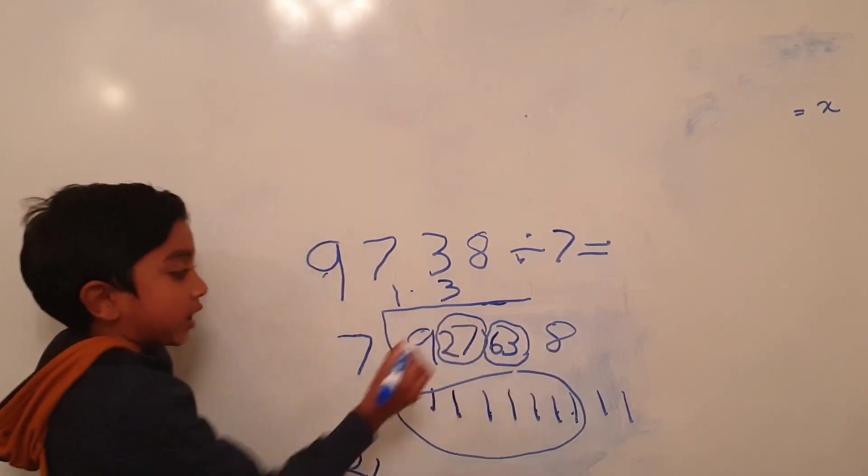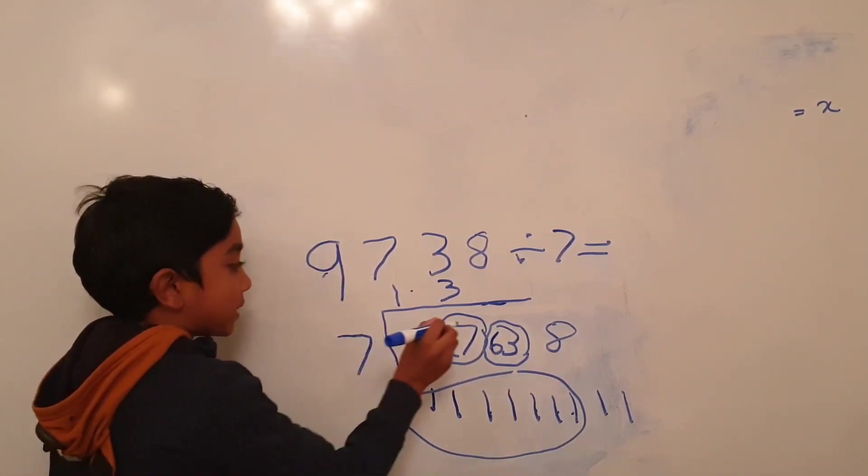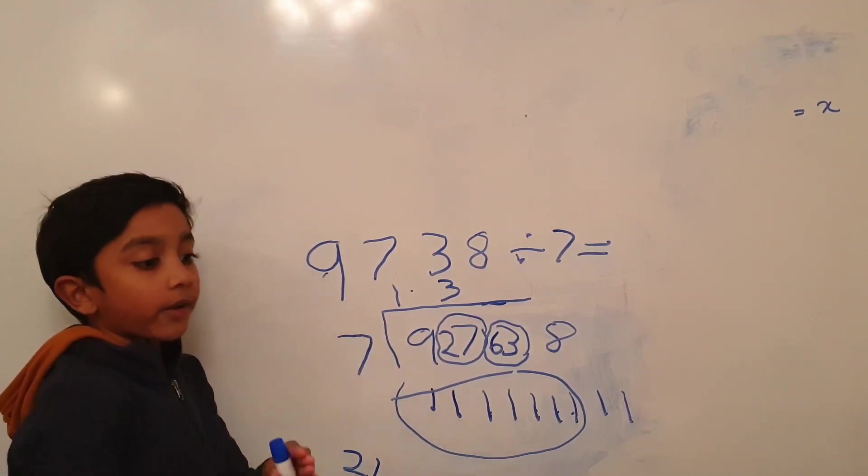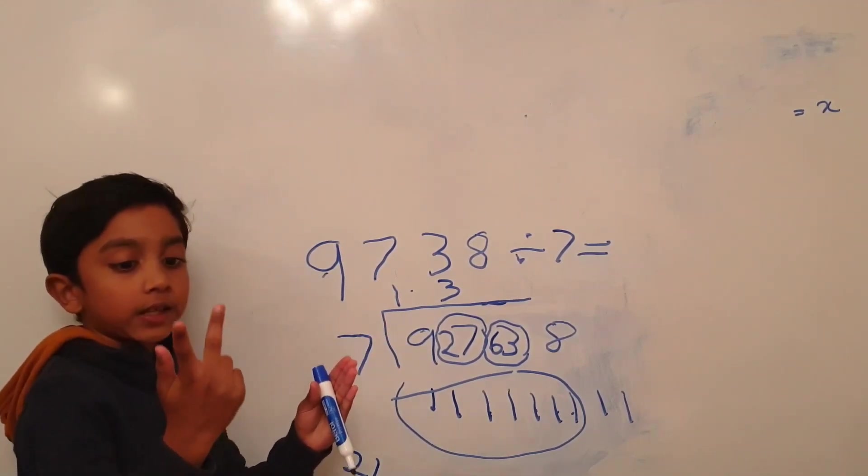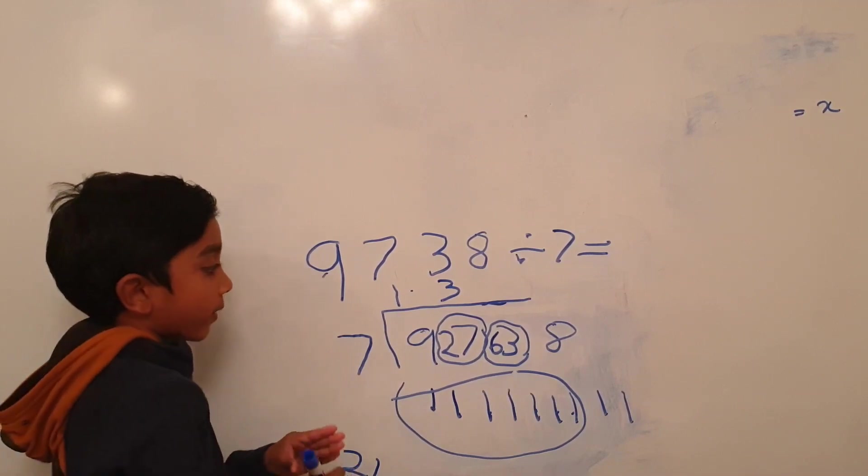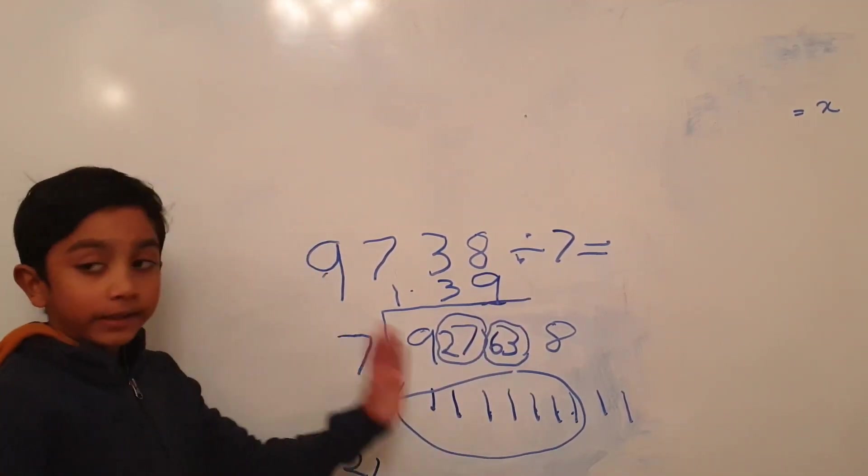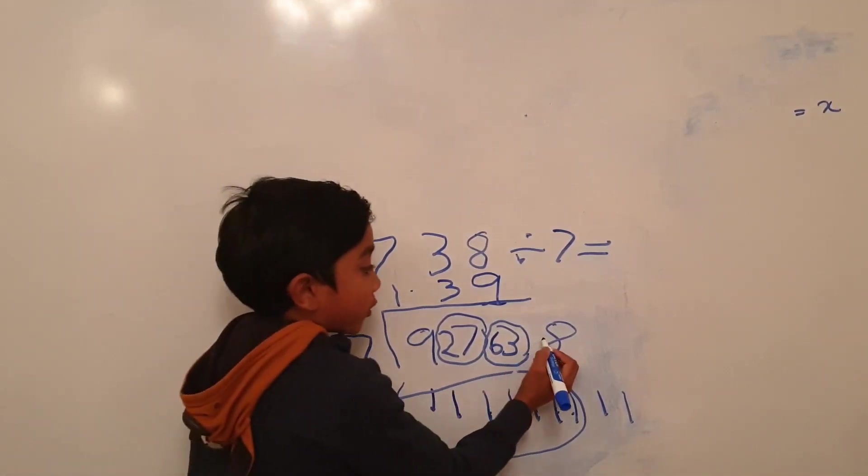Now we have 63. How many 7s in 63? 7, 14, 21, 28, 35, 42, 49, 56, 63. Nine. Now we landed exactly on 63. So we put 0 here.